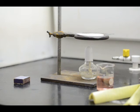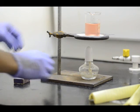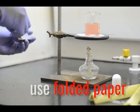When heating beakers, flasks, or dishes, he uses a strip of paper folded several times to hold the beaker.